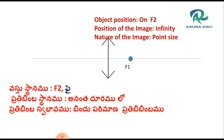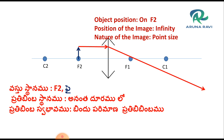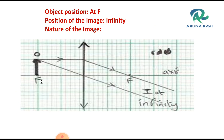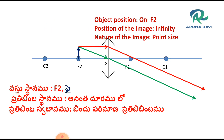Now, with the convex lens having principal axis, F1, C1, F2, and C2: if the object is placed at F2, the ray passing parallel to the principal axis converges at the focus, and the ray through the pole is undeviated. The two refracted rays are parallel to each other, meaning they meet at infinite distance. So the image is formed at infinity. The position of the object is F2 and the image is at infinity.